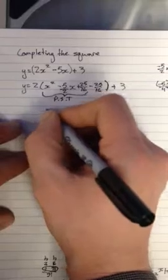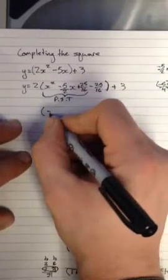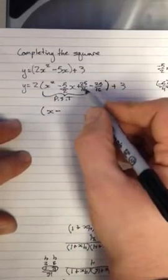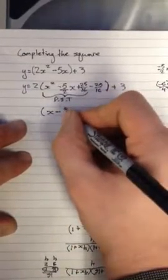It will become x, because it's this sign it'll be x minus, and the square root of 25 over 16 is 5 over 4.